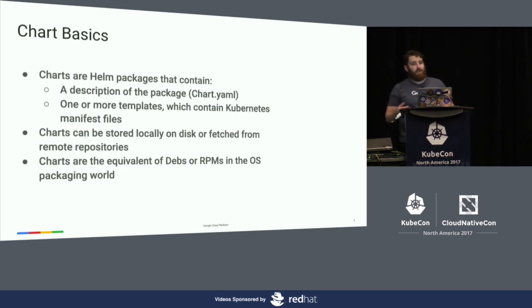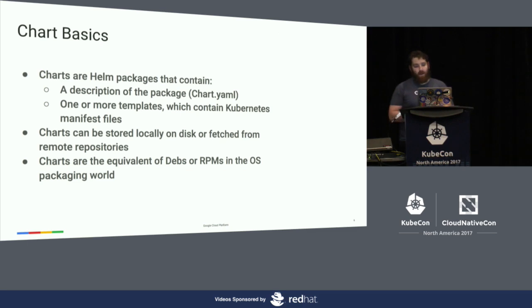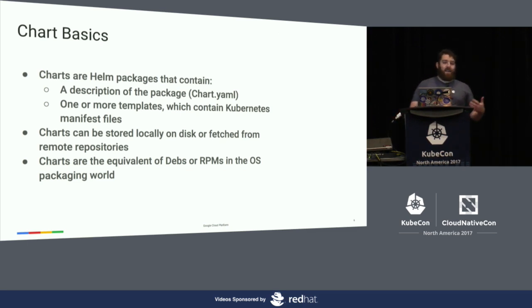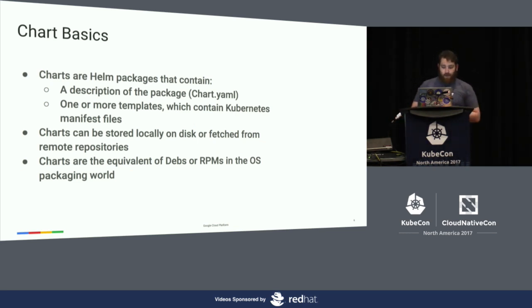And then you have charts, which are more like your packages — your RPMs or your Debian packages. A chart has metadata about what's in the chart, what it is, and then a bunch of manifests that are templated so that you can have ease of use and pass some values through.